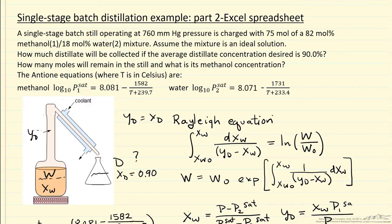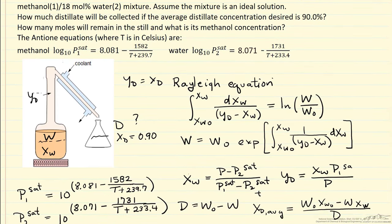This is part two of an example problem for single-stage batch distillation. In the first part, I went through the details of the problem statement, the equations, and a diagram of the system.